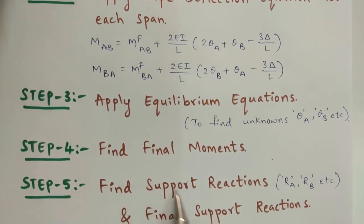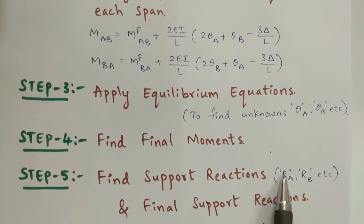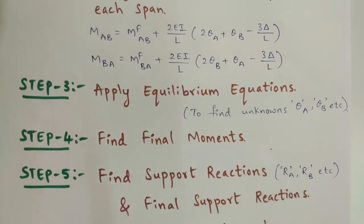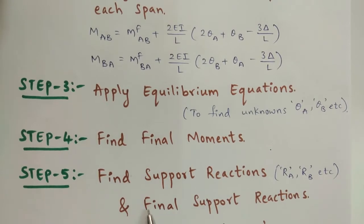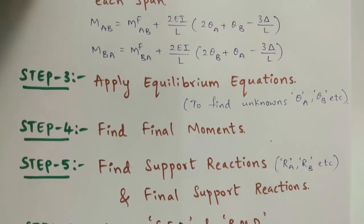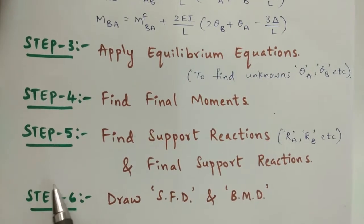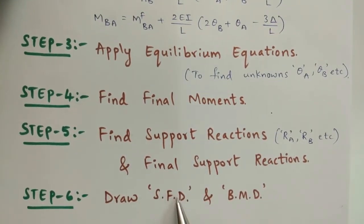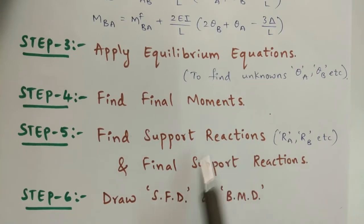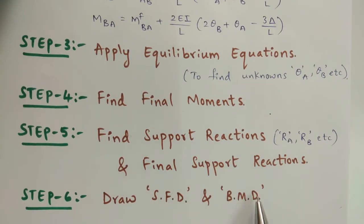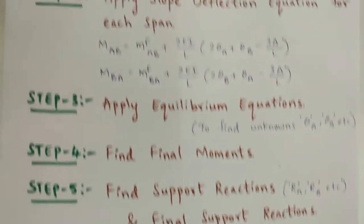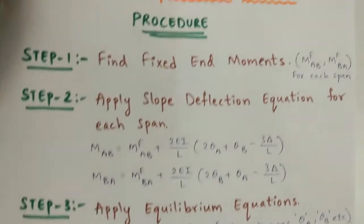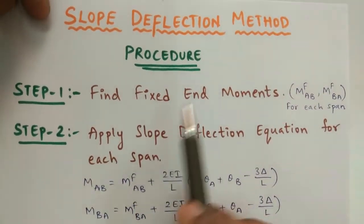In step number 5, you have to find the support reactions RA and RB for each span, and then you have to find out the final support reactions. Next, in the final step, you have to draw the shear force diagram based upon the support reaction values, and you have to draw the bending moment diagram. This is the procedure for the slope deflection method.